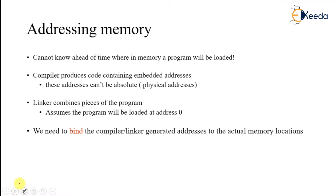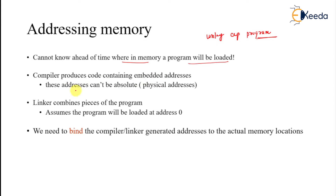If we want to address the memory, the real problem is that after writing a program, you cannot know in which memory location your program will be loaded — you cannot know ahead of time where in memory the program will be loaded. The compiler produces code containing embedded addresses, but those addresses cannot be absolute, meaning physical addresses. So the compiler's responsibility is not to have an absolute code with a fixed memory location — that address is something different.